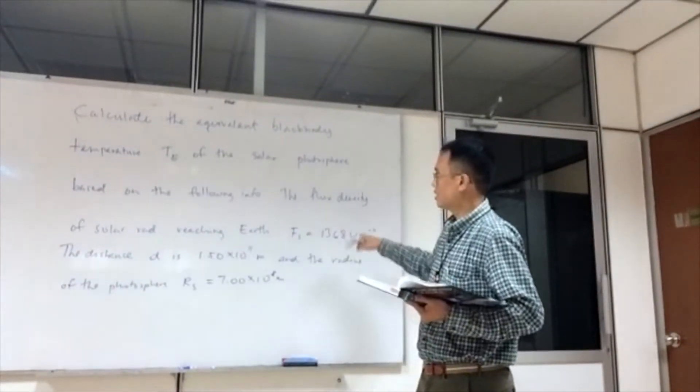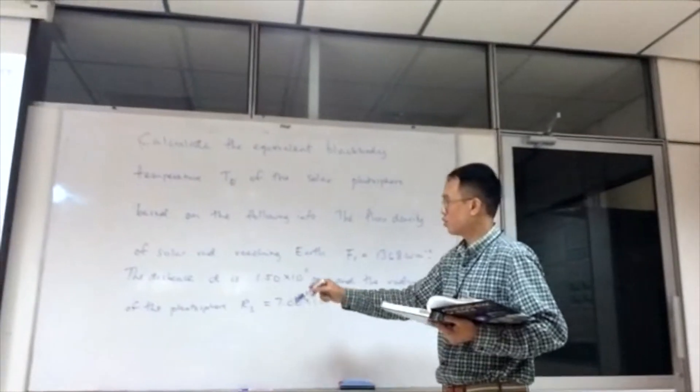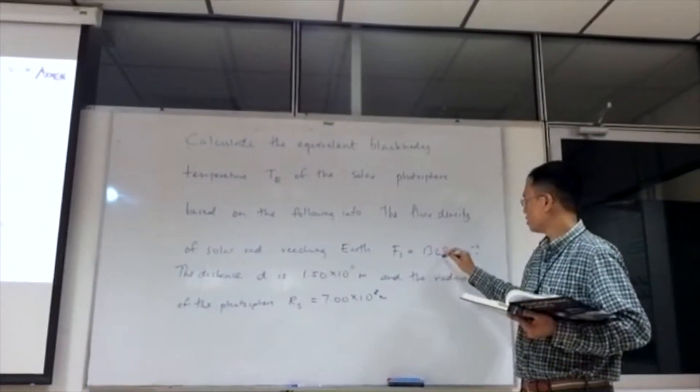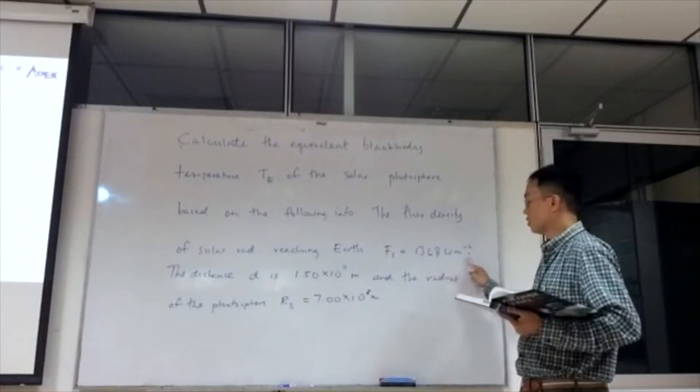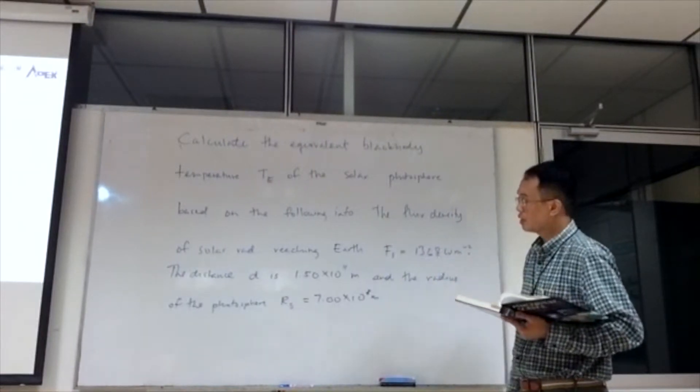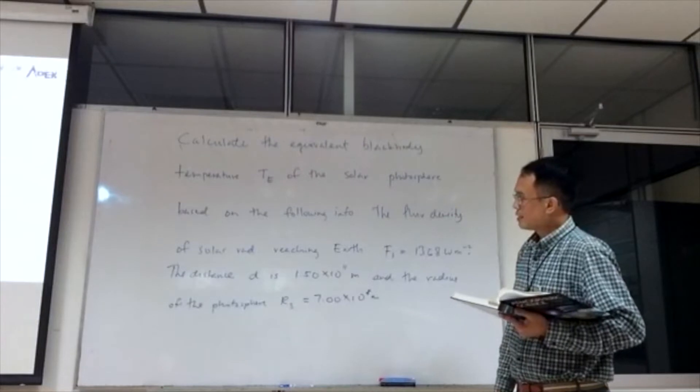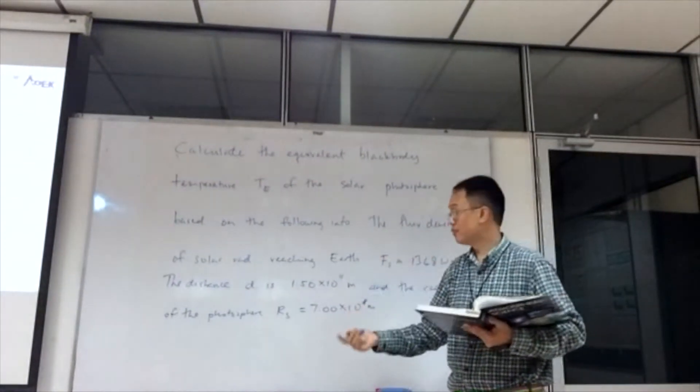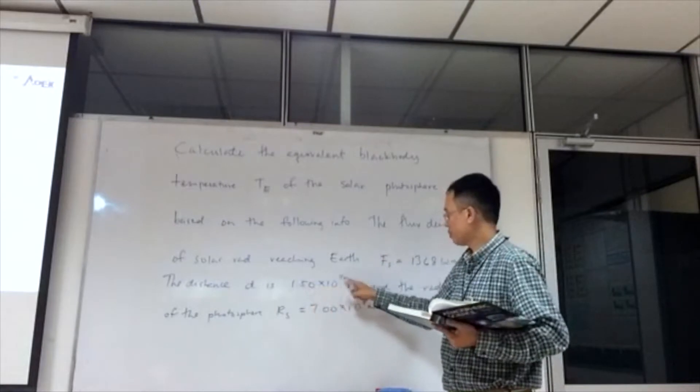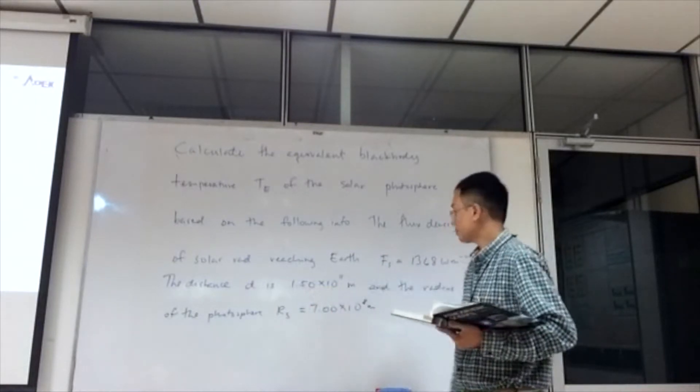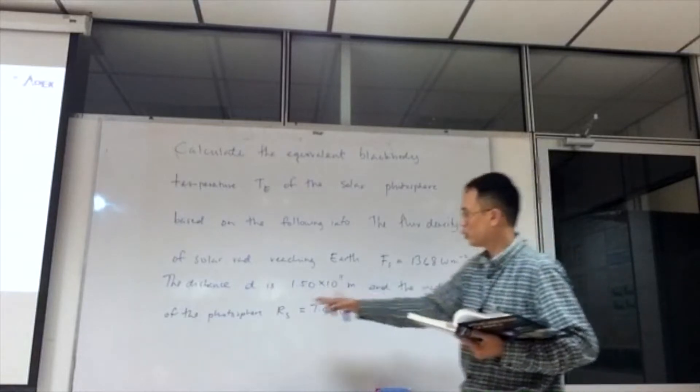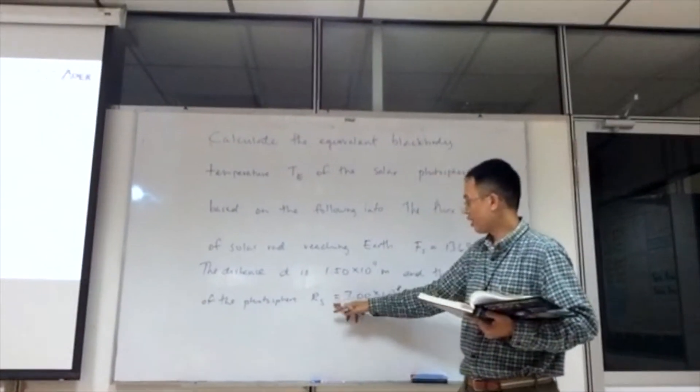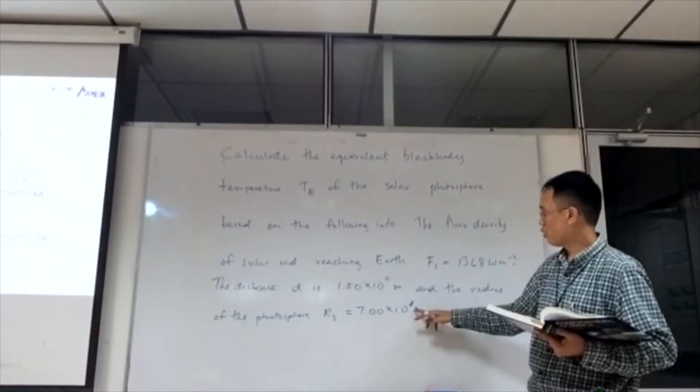The flux density F of solar radiation that reaches Earth is 1368 watt per meter square. Notice the unit, watt per meter square. The distance d between the sun and the Earth is 1.5 times 10 to the power of 11 meters, and the radius of the photosphere of the sun Rs equals 7 times 10 to the power of 8 meters.